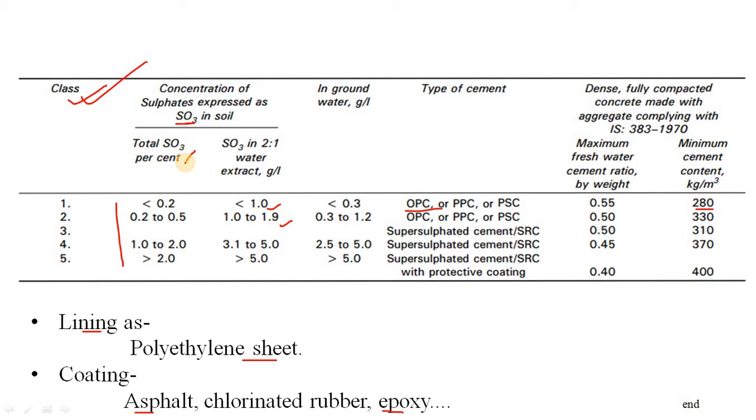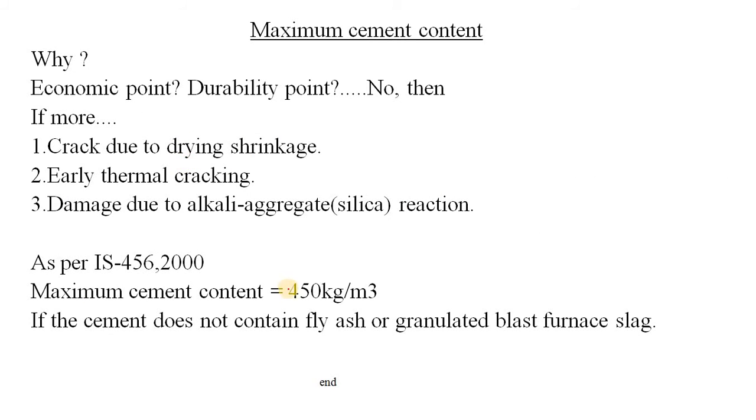Now second question was what should be the maximum cement content. As per IS 456, it should be 450 kg/m³. Why should it be 450 kg/m³? Provided that your cement doesn't contain any fly ash or blast furnace slag. These types of things are used in PSC cement or Portland slag cement, or fly ash is used in PPC or pozzolana Portland cement. So this 450 is the limit for OPC cement.